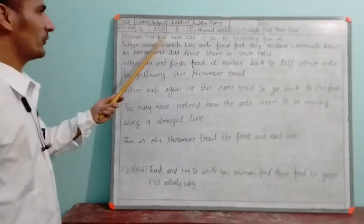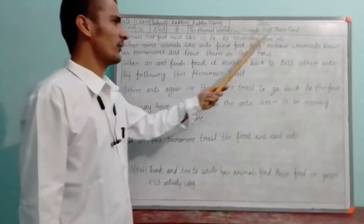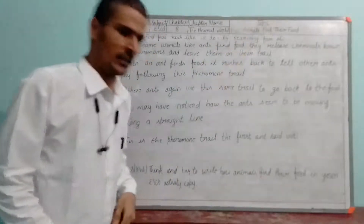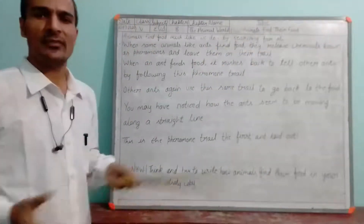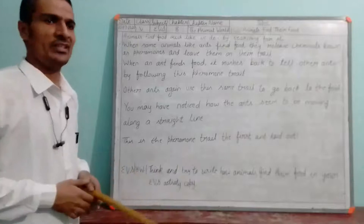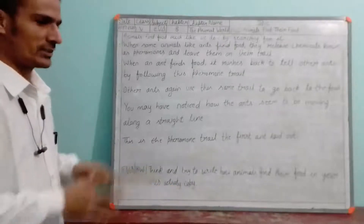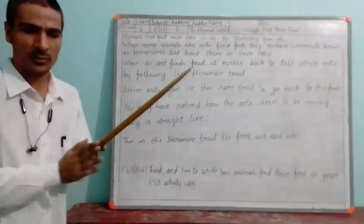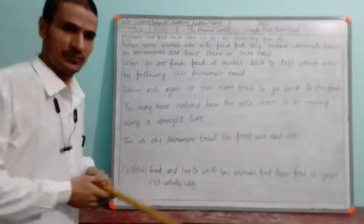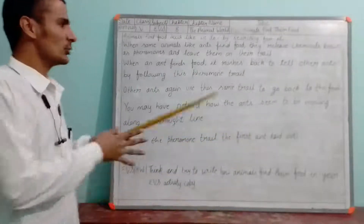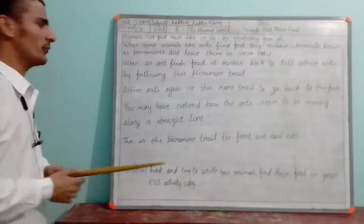Animals find food much like we do — by searching for it. It is a very common thing. Whatever things we need, we definitely try to search for it. So it is a very common activity related to any type of requirement, and it is also used to get food.